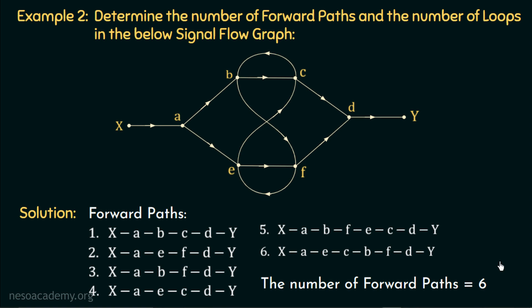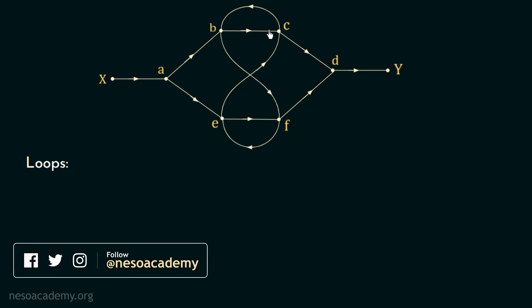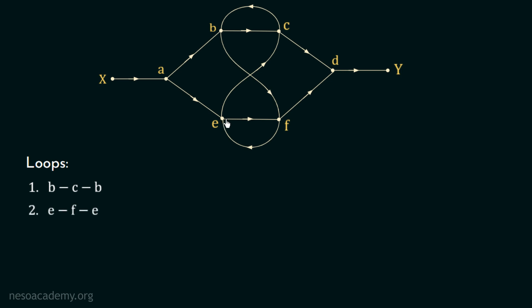Now we will count the number of loops in this signal flow graph. The first loop is B, C, B — starting from node B, travelling to node C via one branch and returning to node B via another branch. The second loop is E, F, E — starting from node E, moving to node F and returning to node E.